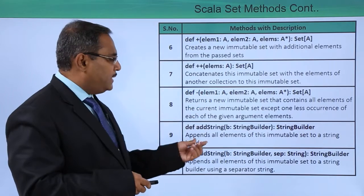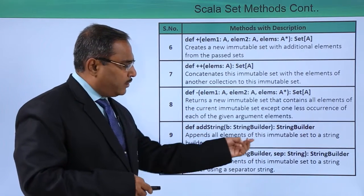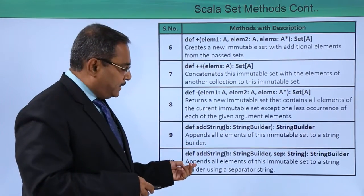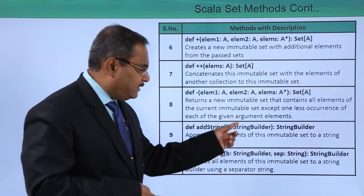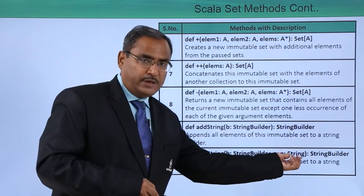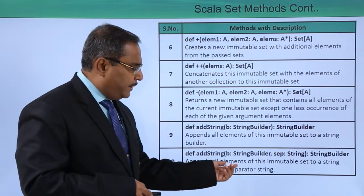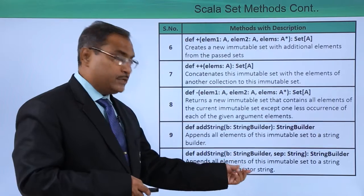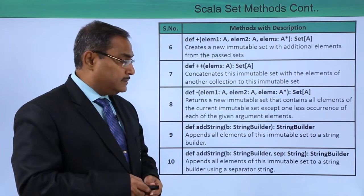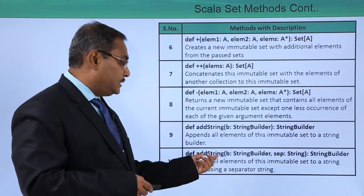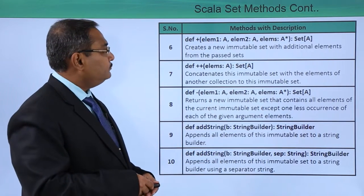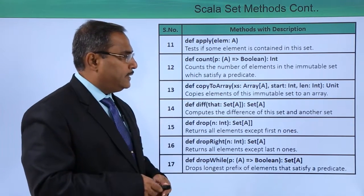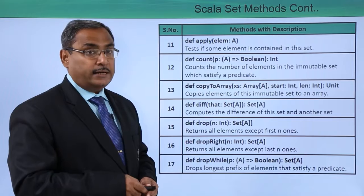We also have plus-plus and minus operators. The addString method appends all the elements of this immutable set to a StringBuilder object. Another variant of addString appends all elements using a separator string passed as the second argument to this addString method. We have apply, and the count method which counts the number of elements in the immutable set that satisfy a certain predicate.